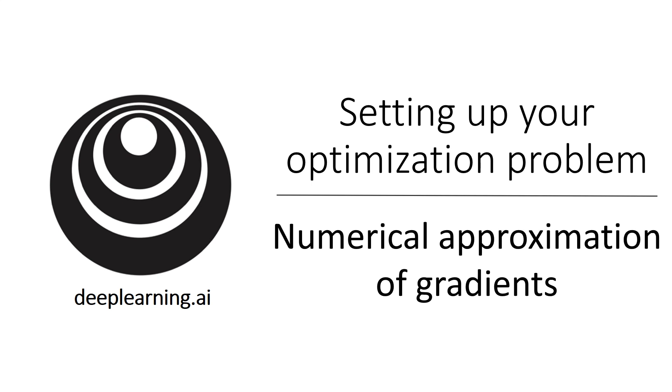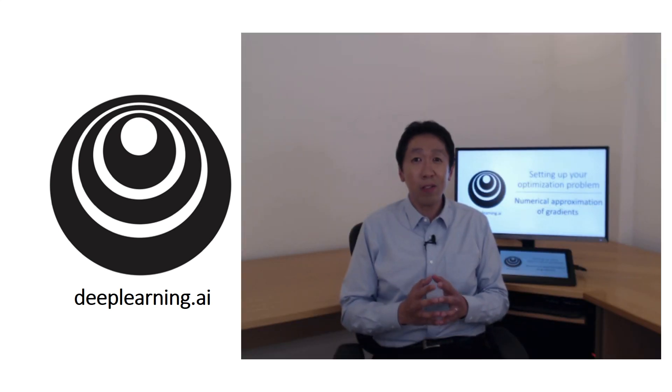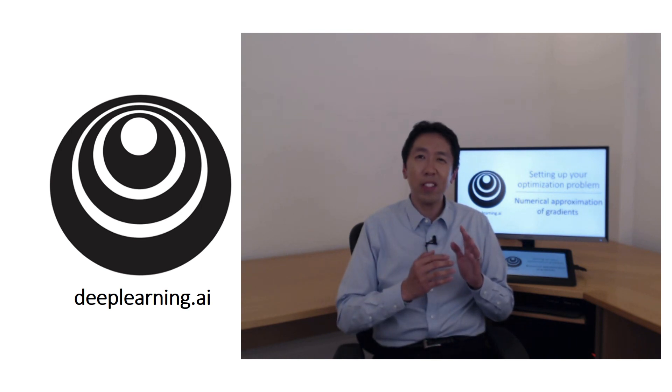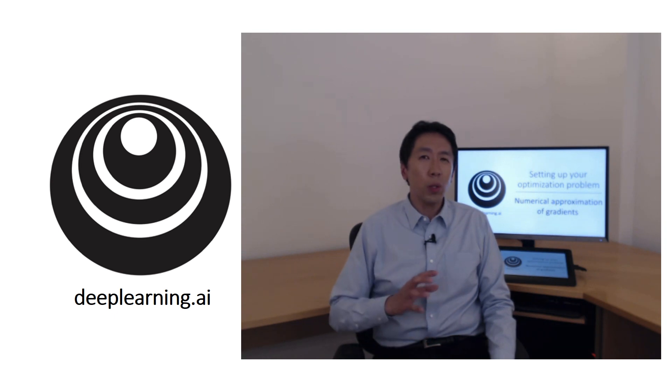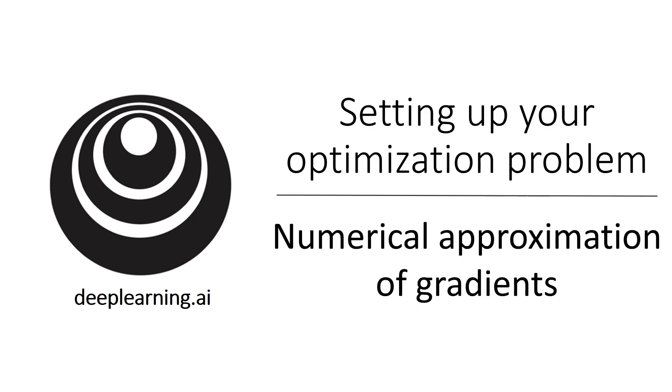When you implement backpropagation, you'll find that there's a test called gradient checking that can really help you make sure that your implementation of backprop is correct. Because sometimes you write all these equations and you're just not 100% sure if you got all the details right in implementing backpropagation. So in order to build up to gradient checking, let's first talk about how to numerically approximate computations of gradients. And in the next video, we'll talk about how you can implement gradient checking to make sure that your implementation of backprop is correct.